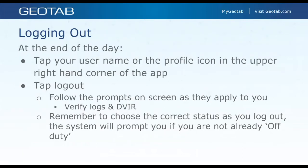To log out, tap your username or profile icon in the top right corner of the app. That same icon is where you add co-drivers. Once you initiate logout, the app will prompt you to verify your logs, do a post-trip DVIR, and choose your status if not already off-duty. We make sure drivers don't log out while in drive status, as that can cause availability issues and unnecessary violations, so drivers must be in any status other than drive during logout.